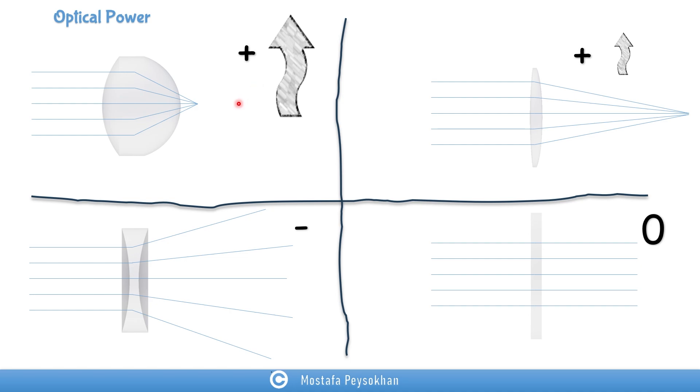That's the reason that sometimes people use positive lens for biconvex lens or convex lens. This lens is also positive, but not as strong as this lens. This lens, the optical power is negative because the focus point is somewhere here, and for this piece of glass, the optical power is zero.